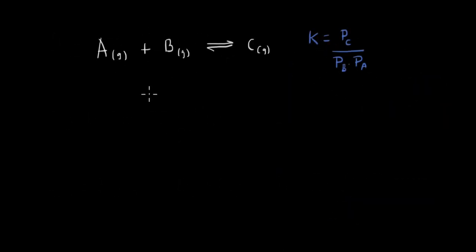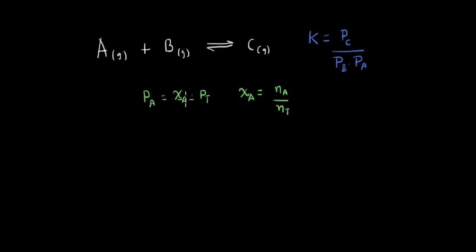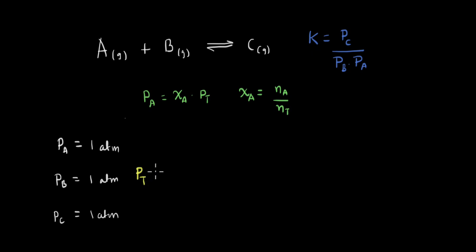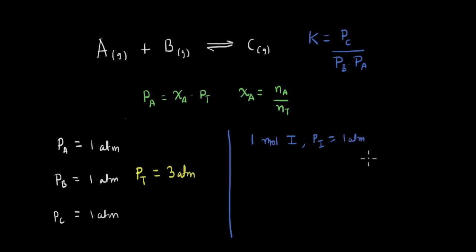We go back to the same reaction as before, but this time looking at the constant volume condition. The rate constant is defined the same way. The partial pressure of A is defined as the mole fraction of A times the total pressure, where mole fraction is the number of moles of A divided by the total number of moles. We assume the partial pressures of A, B, and C are all equal to 1 atm at equilibrium, so the total pressure is 3 atm. Now we want to know what happens when we add an inert gas — let's say 1 mole of inert gas I with a partial pressure of 1 atm.